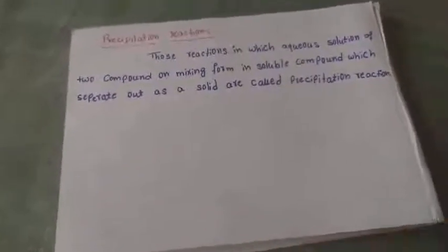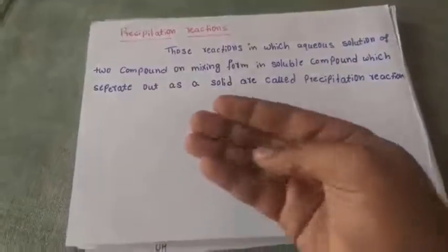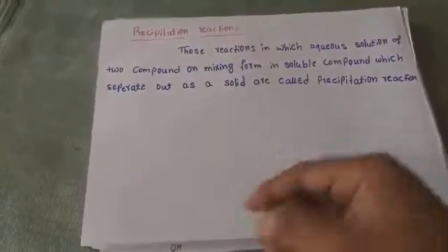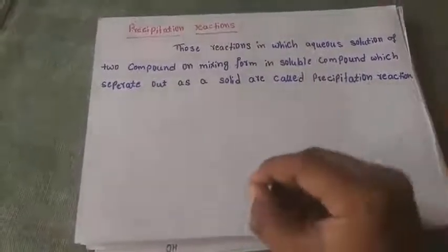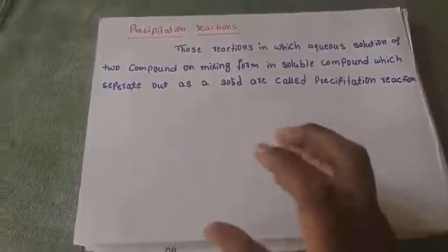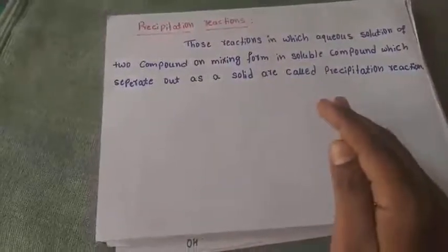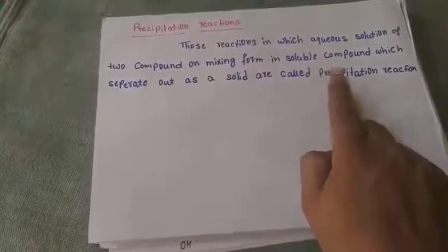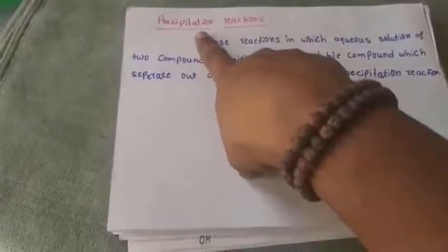The reason a precipitate forms is that when a compound is insoluble in aqueous solution or in water, it separates out as a solid. For example, when you add sugar or salt to water it completely dissolves, so no precipitate forms. But when you add soap or detergent to water, sometimes a precipitate forms because some compounds present are insoluble in water. When a reaction produces two products and one is insoluble, that insoluble compound separates out as a solid — that solid is the precipitate, and those reactions are called precipitation reactions.